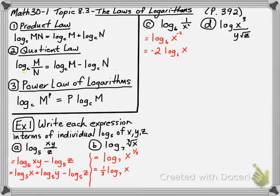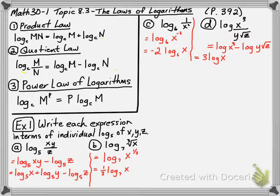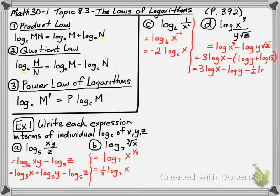And in D, we have log of x cubed over y times root z. We're going to say we have the log of x cubed minus the log of y root z. We can expand it further to say 3 times the log of x minus the log of y minus 1 half log z, because root z is z to the power of a half.